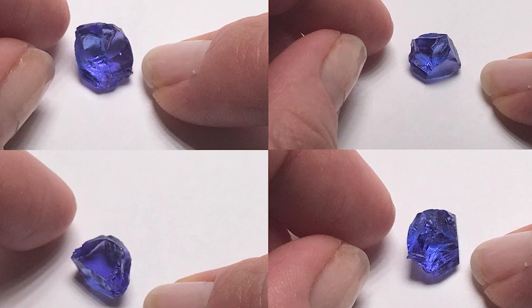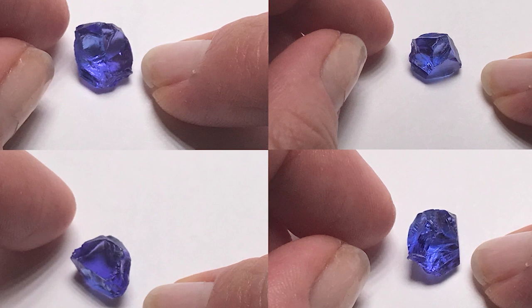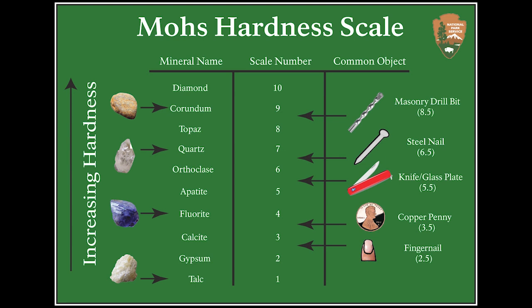On the Mohs hardness scale, which I explained in a previous video, Tanzanite has a hardness of 6 to 6.5, which means that you can't scratch it with a copper penny. You can scratch amber jewelry, for example, with a copper penny, as amber only has a hardness of 2 to 2.5.